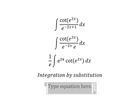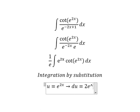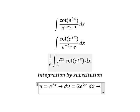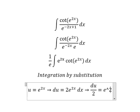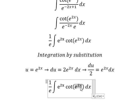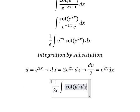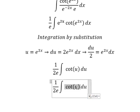So I will put u equals to e to the power of 2x. Later, we need to do the first derivative for both sides. Because we don't have number 2, we need to divide both sides by 2. So this one we change for u, and e to the power of 2x dx we change for this one.